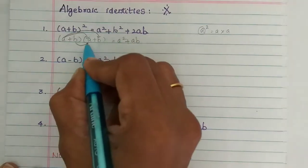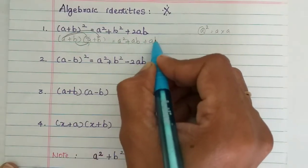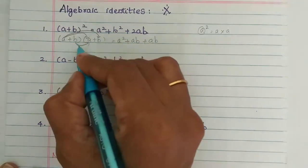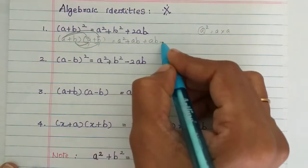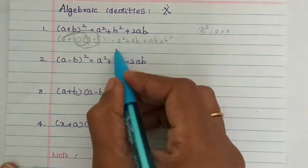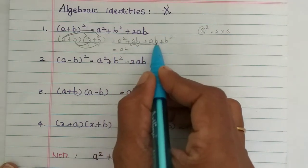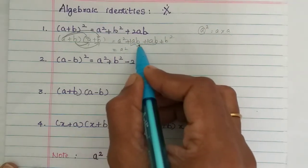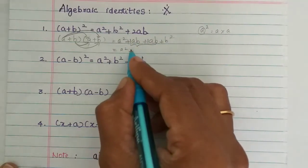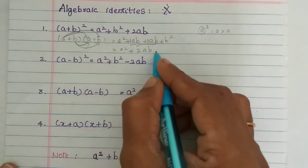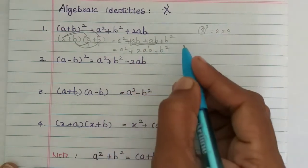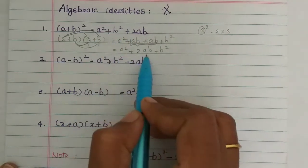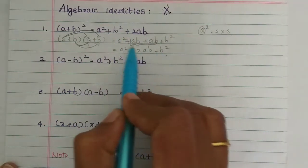Then b into a is ab. Then plus b into plus b is b squared. So now we have a squared, then two like terms: ab and ab, with coefficient 1 each. So 1ab plus 1ab gives plus 2ab. Then plus b squared. So this is: a squared plus 2ab plus b squared.